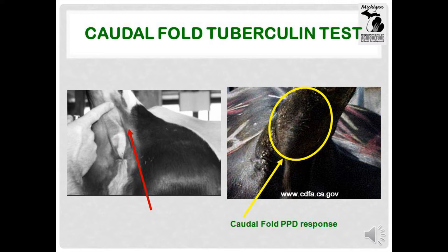The veterinarian evaluates the injection site for an immune response 66 to 78 hours after injection. The immune response can sometimes be very obvious and seen from a distance, but more often is subtle and only felt but not seen. Therefore, the evaluation involves both looking at the site and feeling the site. If there is no redness or swelling or bump, the animal is called CFT test negative and no further testing is required. If there is redness or swelling or a lump or bump, the cow is said to have responded to PPD. Responding to PPD does not mean the animal has bovine TB and is not a definitive diagnosis of bovine TB. Responding to PPD means that the animal requires further testing.